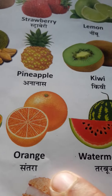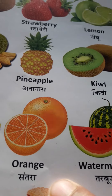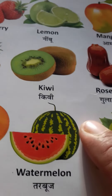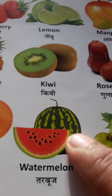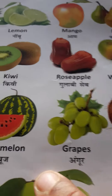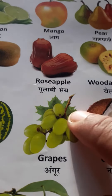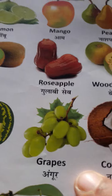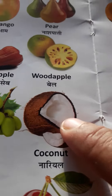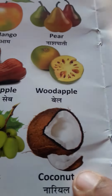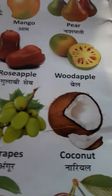Orange means santhra. Watermelon means tarbuj. Graves means anggur. Coconut means narial.